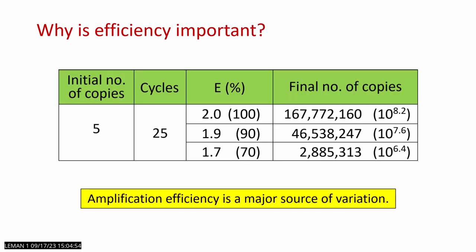The relation between CQ and target concentration depends heavily on amplification efficiency. If you have a sample with an initial copy number of five and by cycle 25 you have 100% efficiency, you'll have almost 200 million copies. If your efficiency drops to 70%, you'll have only 2 million copies. When submitting samples for testing, you want to know that difference. So amplification efficiency is very important and must be accounted for when we normalize.